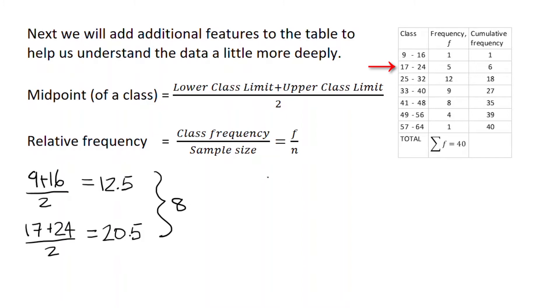Next, we'll do the relative frequency. So you take the frequency in the class. So for the first class, that's 9 through 16. That's 1 divided by 40. If you put that into your calculator, you'll see that that's 0.025. For the next class, 17 to 24, that's 5 divided by 40. And all of that, if you put that in your calculator, is 0.125. You do that all the way down.